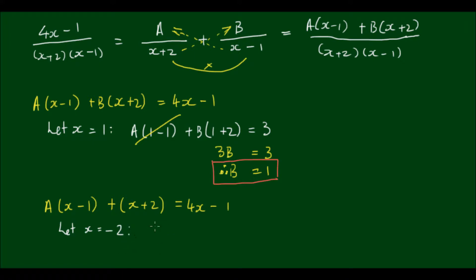So that gives me A times (-2-1) plus (-2+2) is equal to 4 times negative 2, which equals negative 8 minus 1, gives me negative 9.